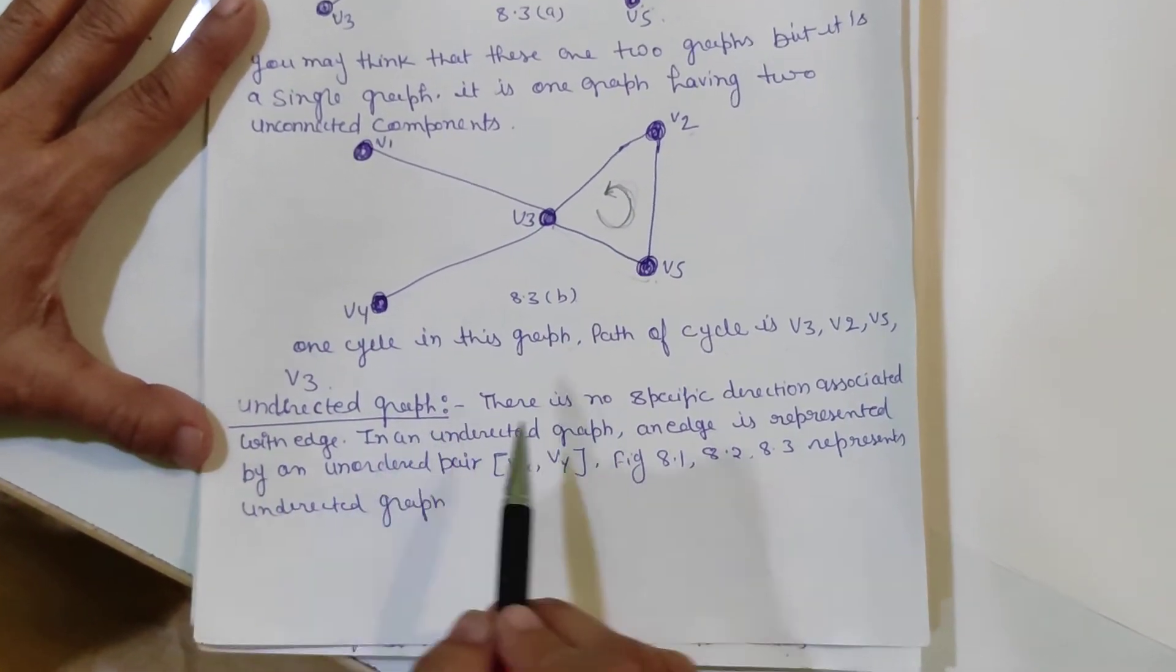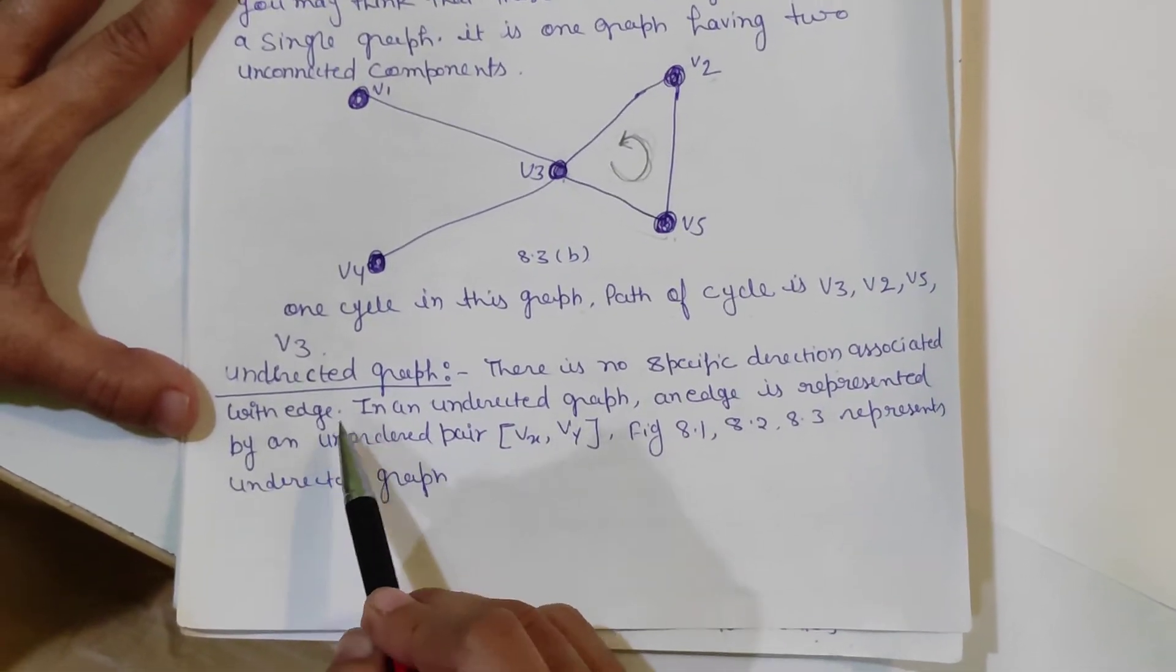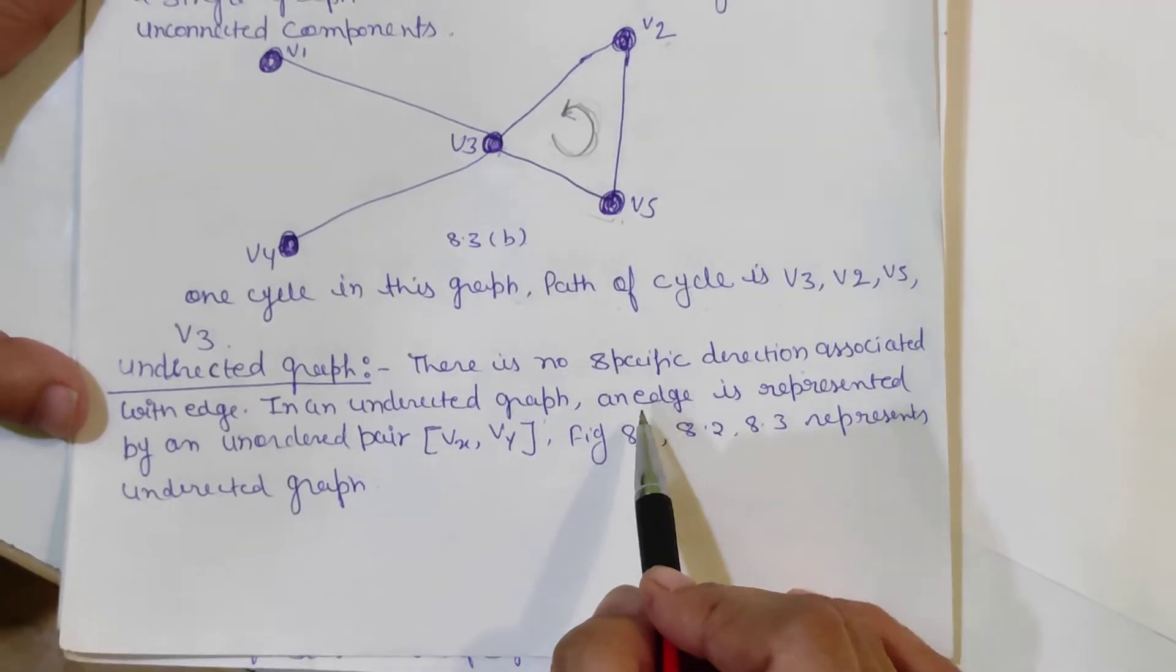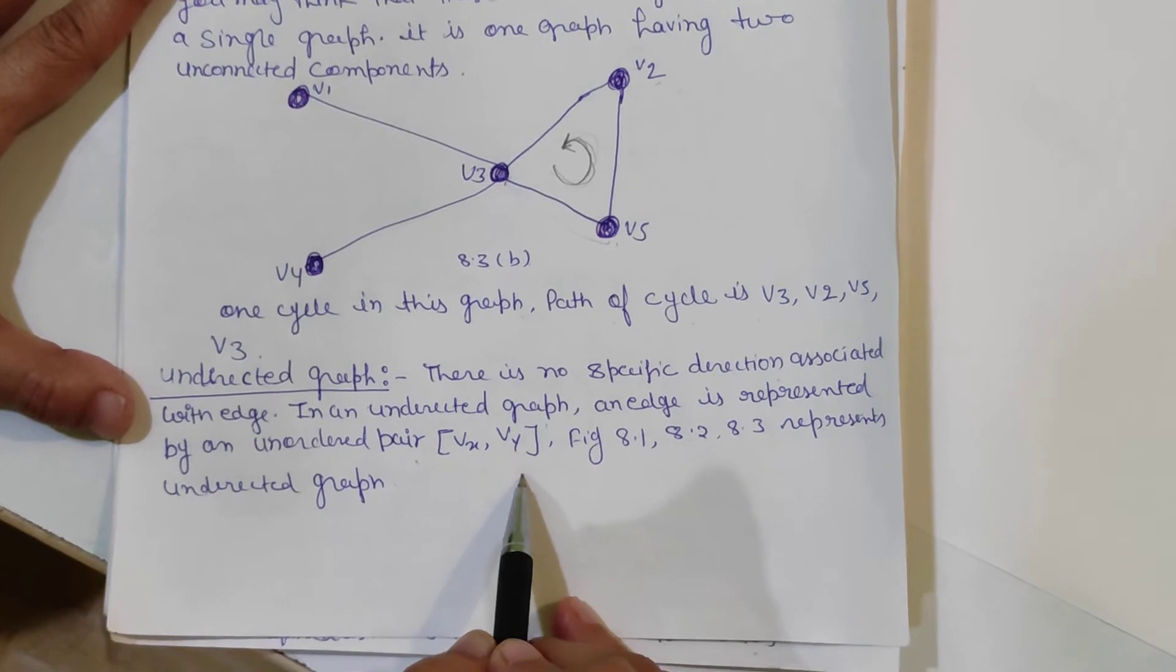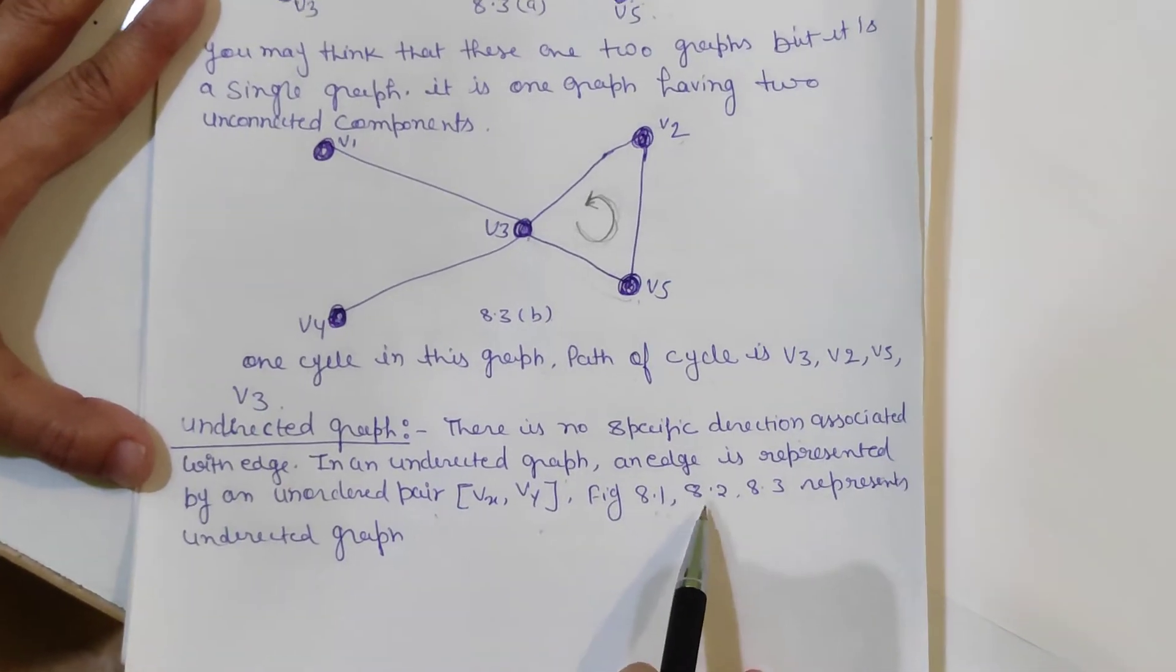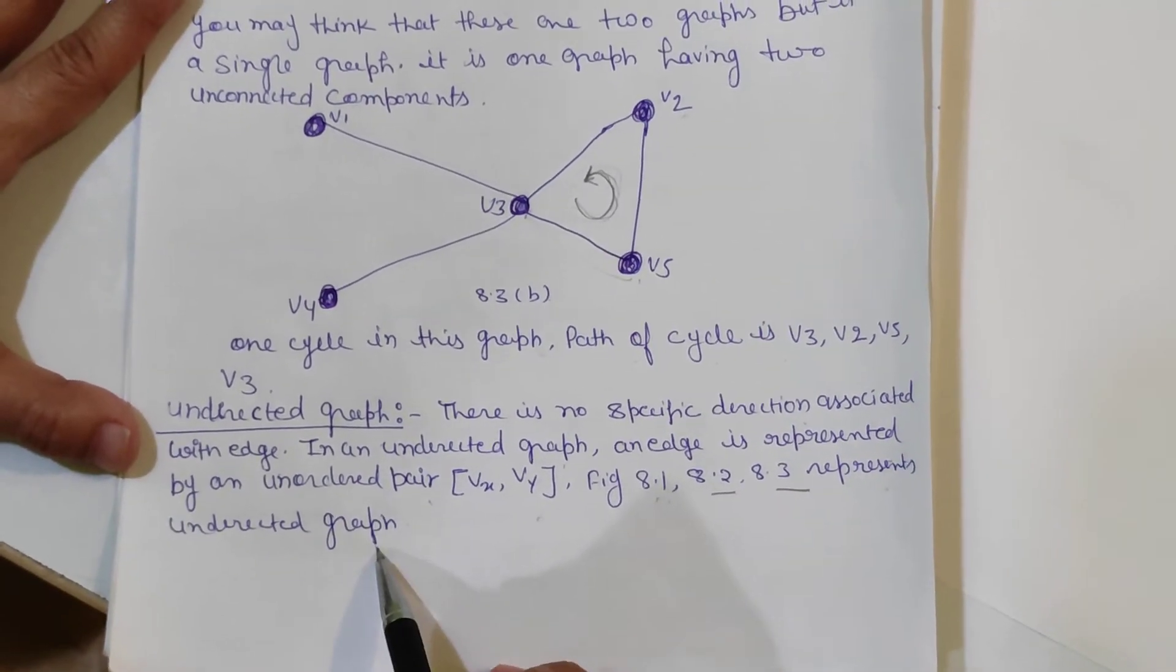Undirected graph: There is no specific direction associated with edges in an undirected graph. An edge is represented by an unordered pair Vx, Vy. Figures 8.1, 8.2, 8.3 represent the undirected graph.